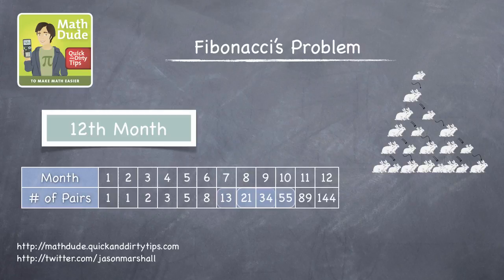And after 12 months, you'll get 144 pairs of rabbits. In other words, the 12th Fibonacci number is 144.